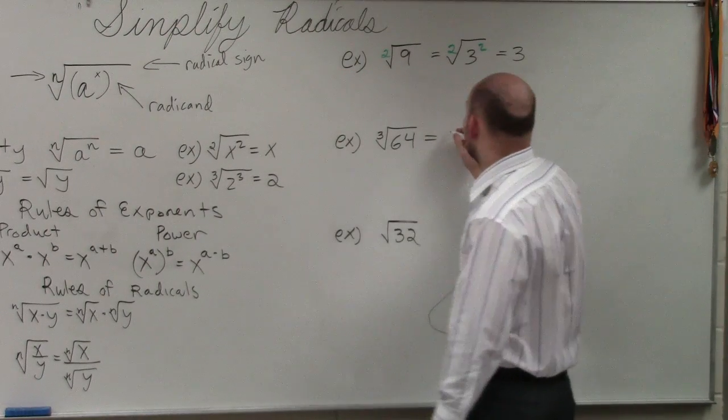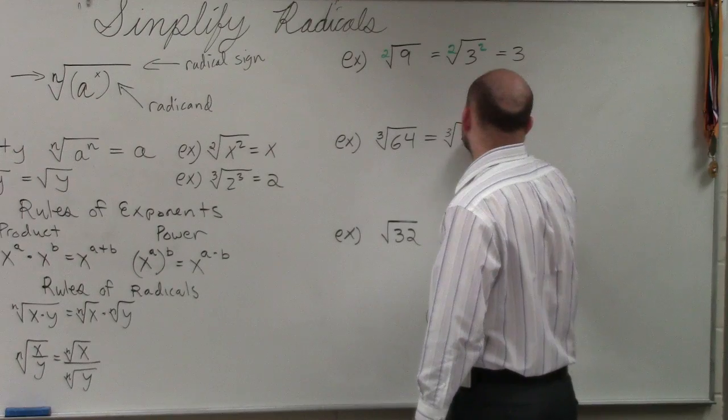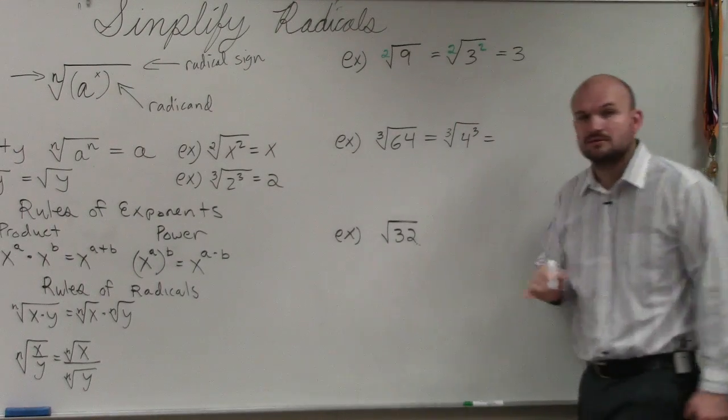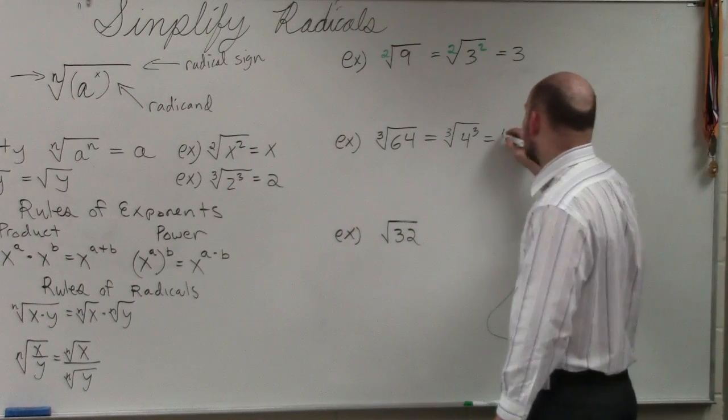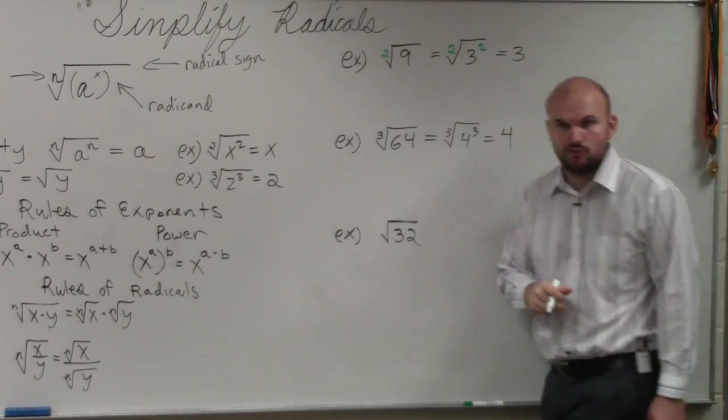So you could see that I could rewrite this as 4 cubed. Right? Does that make sense? And then now I can apply the identity element and say that's just going to equal 4.